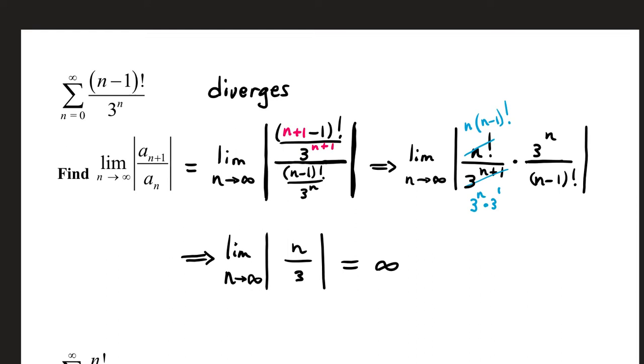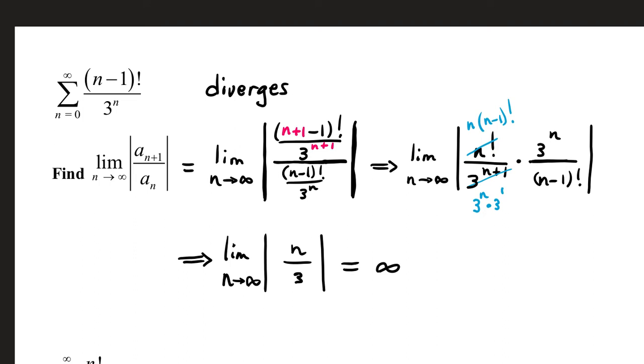In our second example, we have the infinite series, the sum from zero to infinity of n minus one factorial over three to the n. Let's build our limit. Remember, a sub n, the original is your denominator, so I'm not changing anything in the denominator. In the numerator, n gets replaced with n plus one, so that's n plus one minus one factorial. In pink, I tried to highlight where n plus one goes in. Top times bottom flipped over.